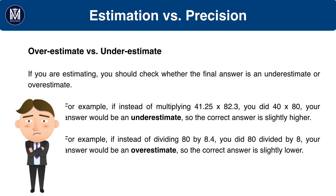One thing to bear in mind when estimating is whether you have overestimated or underestimated. For example, if the question was 41.25 times 82.3 and instead you did 40 times 80, the sum would give you 3,200. But if there is no option for this in the answers — only B, 3,400 and C, 3,000 — you have to look back at the sum you did and you will see that you have underestimated. So the real answer is higher than 3,200, meaning it will be B, 3,400.